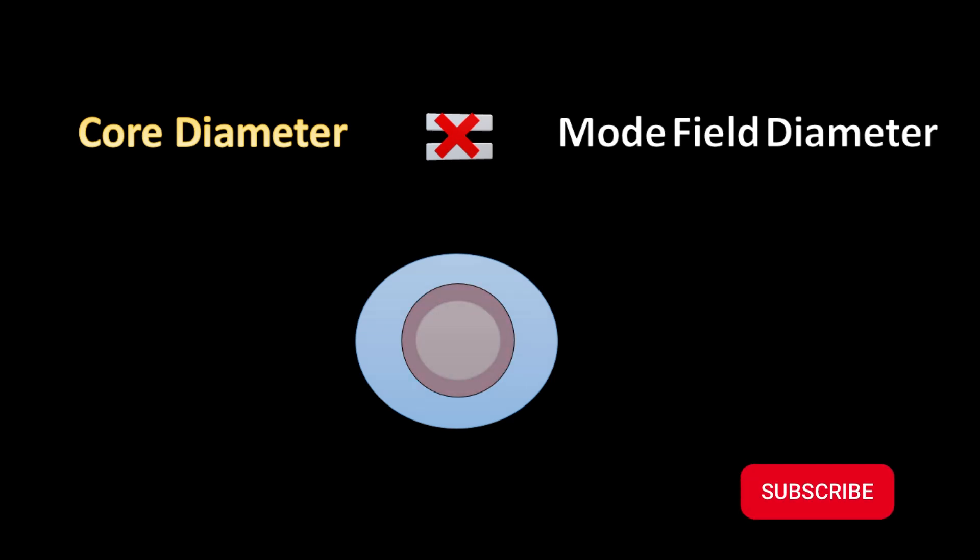In this video, we'll discuss what mode field diameter is, how it's different from core diameter, and the benefits of having large effective area fiber.